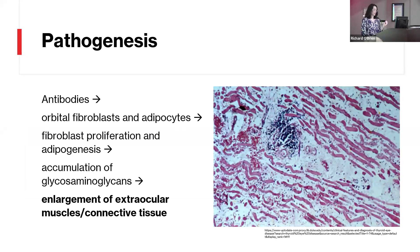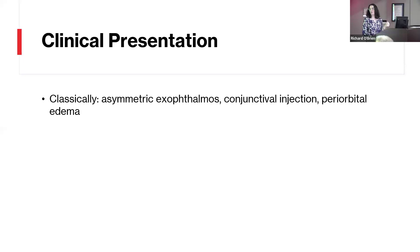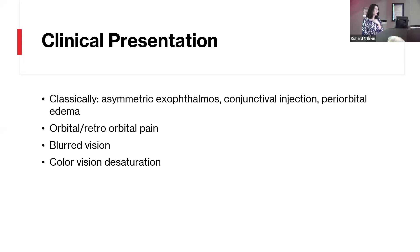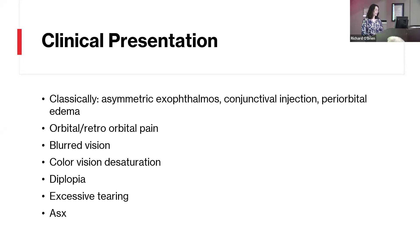Classically, individuals with thyroid eye disease will present with asymmetric exophthalmos, conjunctival injection, and periorbital edema. As we saw in our patient, it can also present with retroorbital or orbital pain, blurred vision, and color vision desaturation. Additional symptoms could include diplopia or excessive tearing, or it can be completely asymptomatic.